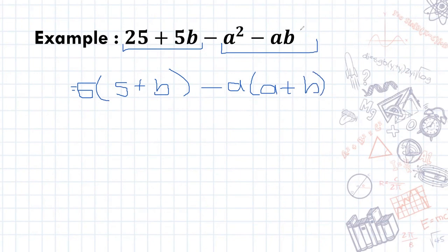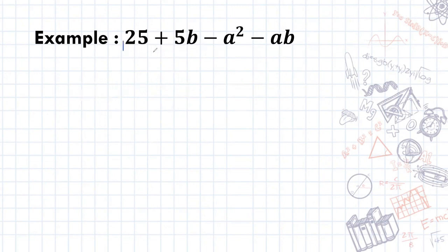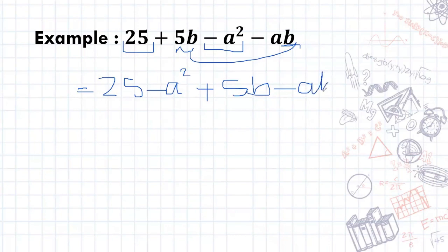So let's try a different arrangement. I'm going to clear all of this and let's do this. I'm going to group the 25 and the negative a² and the 5b and the negative ab together. So let me just rewrite that. So 25 minus a² plus 5b minus ab. The reason I'm doing that is because I've got a minus plus and a minus.